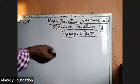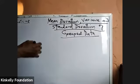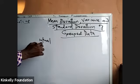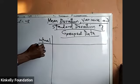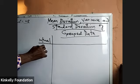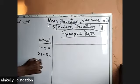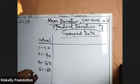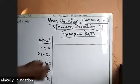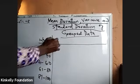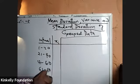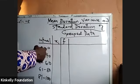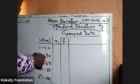Now consider grouped data, which has class intervals. For example: 1–20, 21–40, 41–60, 61–80, and 81–100. After listing the interval, we identify the midpoint. The midpoint is found by adding the class boundaries and dividing by 2.